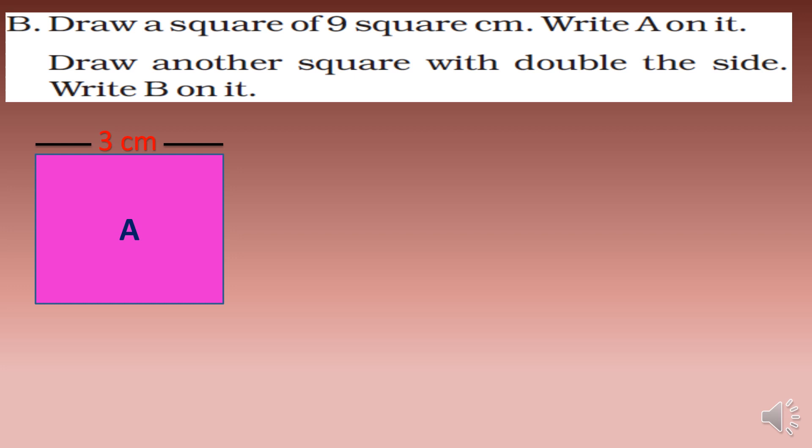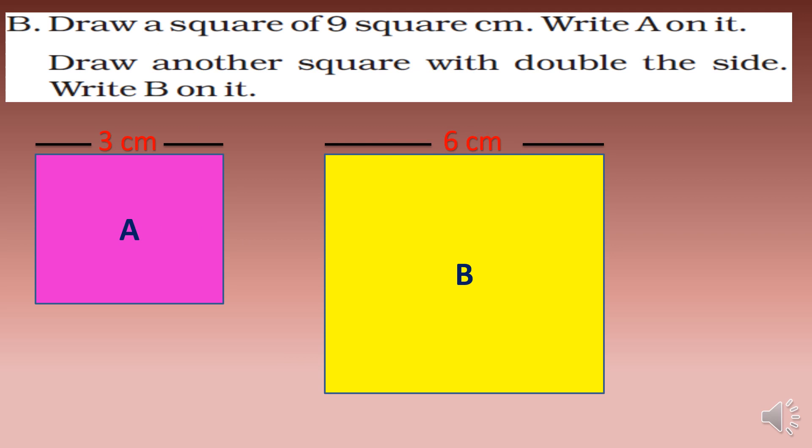So the square has nine square centimeters and is labeled A. Now draw another square with double the side. In square A the side is three centimeters, so in square B the side will be six centimeters. Write B on it.